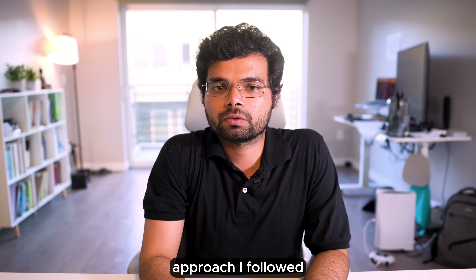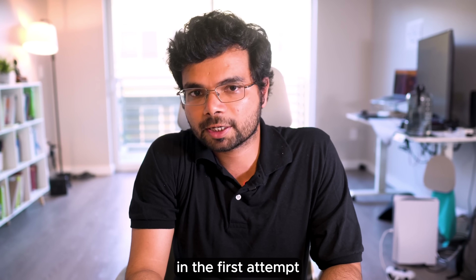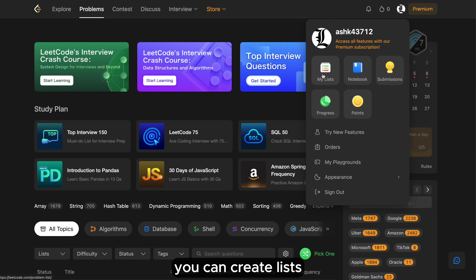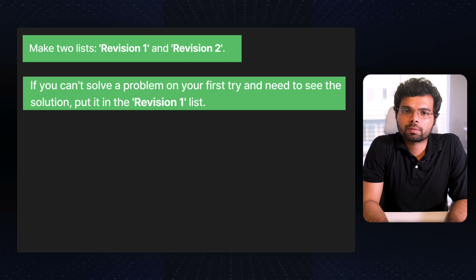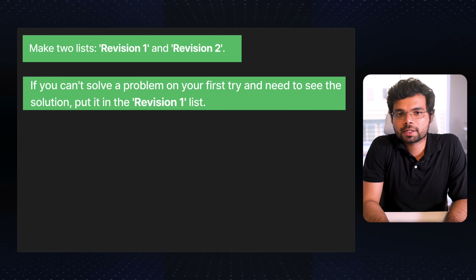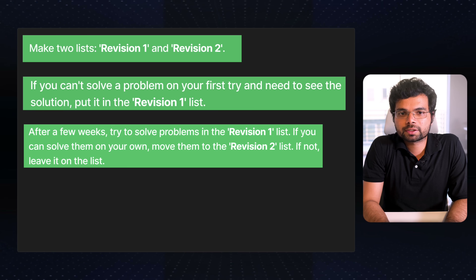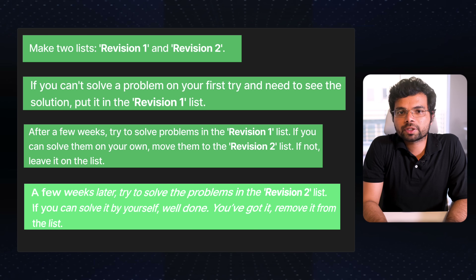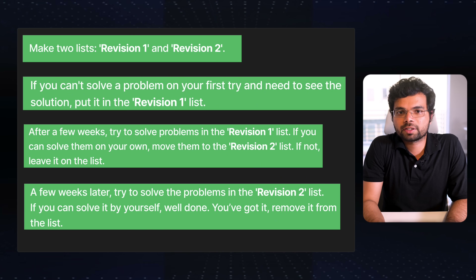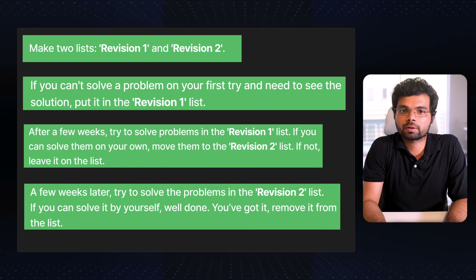Here is an effective approach I followed for the problems I couldn't solve in the first attempt. On LeetCode, you can create lists. Make two lists: Revision 1 and Revision 2. If you can't solve a problem on your first attempt and need to look at the solution, put it in the Revision 1 list. After a few weeks, try to solve problems in the Revision 1 list. If you can solve them on your own, move them to the Revision 2 list. If not, leave it in the Revision 1 list. A few weeks later, try to solve the problems in the Revision 2 list. If you can solve it by yourself, well done — you've got it. Remove it from the list.